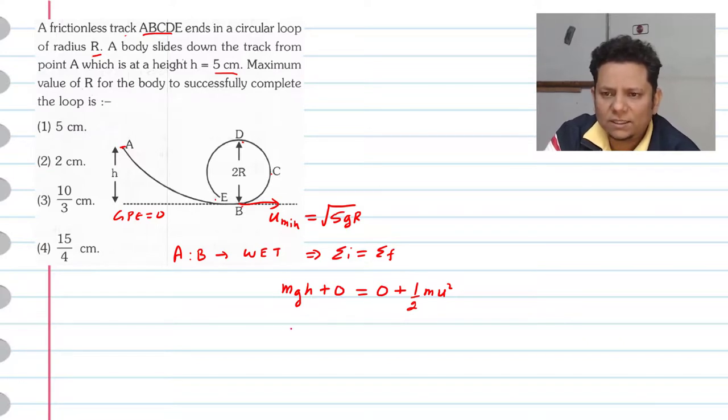Which implies M cancels on both sides, and the potential energy here will be zero. So this implies gh will be equal to half u squared.